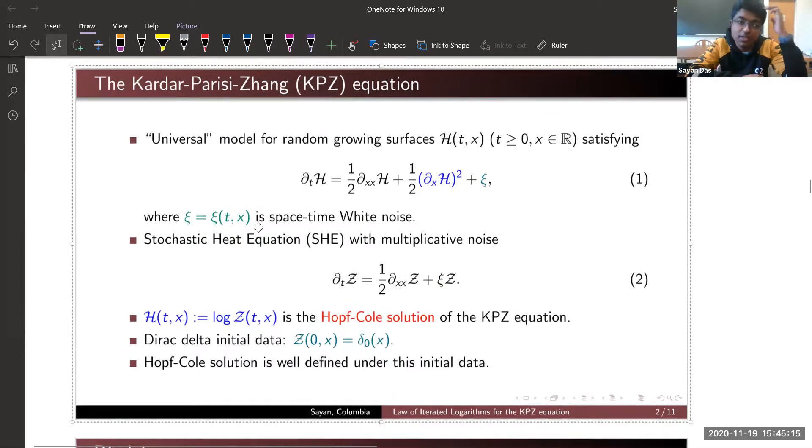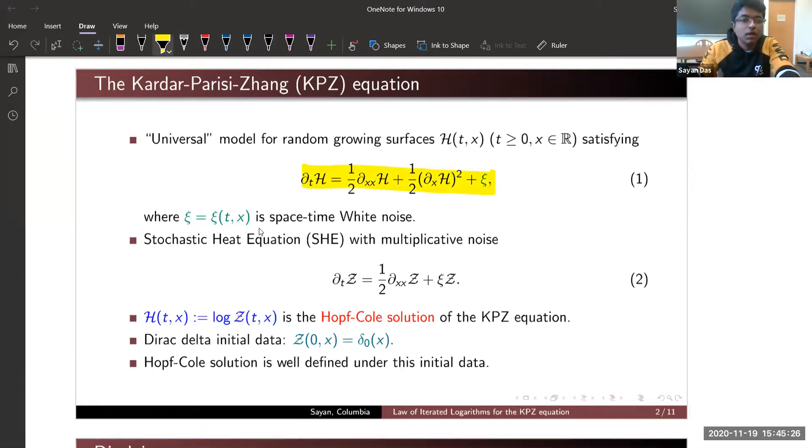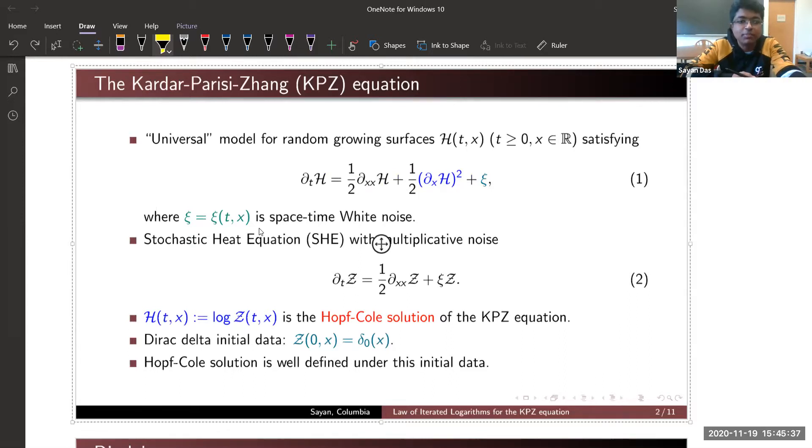The KPZ equation is the most popular model for modeling random gray interfaces, given by a stochastic partial differential equation. Because of the presence of non-linearity this equation is ill-posed. One way to tackle this problem is to consider stochastic heat equation with multiplicative noise. If you take logarithm of equation two you get equation one formally. One way to define a solution is to solve the second equation, take logarithm, and say it is the solution of KPZ equation. This is known as the Hopf-Cole solution.